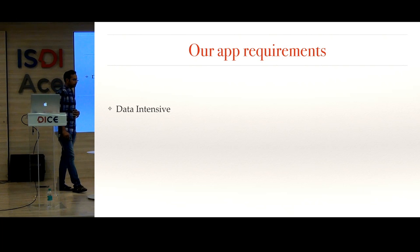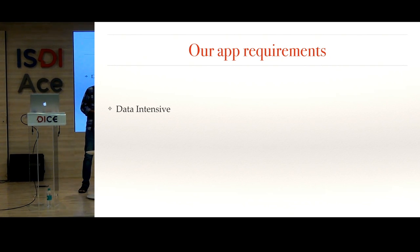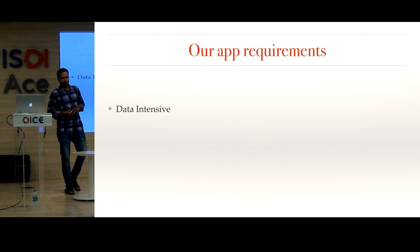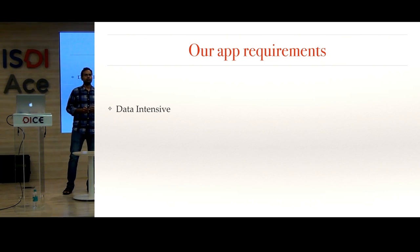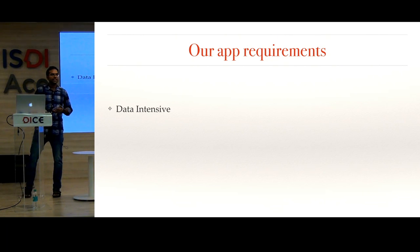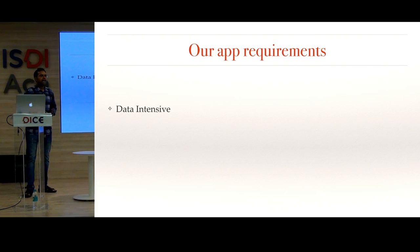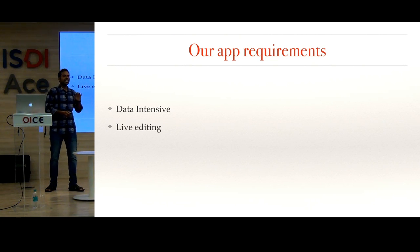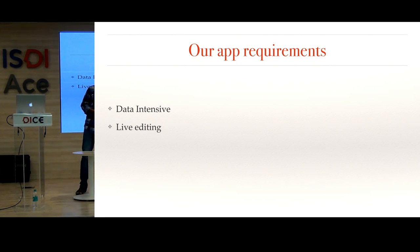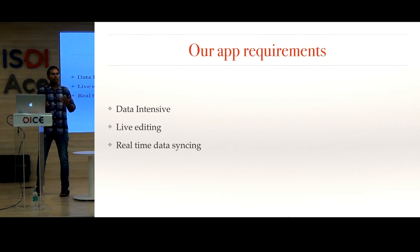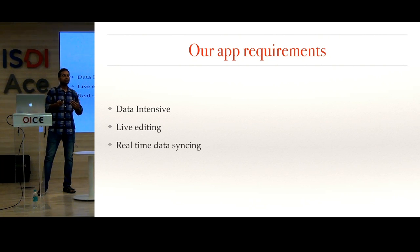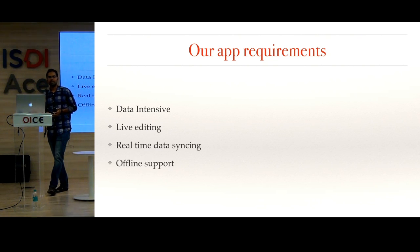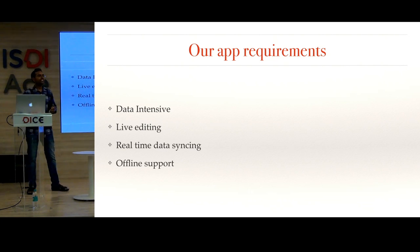Let's talk about our app. We are working on this energy auditing software, and it's a very data-intensive application. We have a lot of network-intensive features like live editing — for example, on every keystroke, we have to save that update to the backend. And we need real-time data syncing: if multiple users are using the app at a time and one user edits something, the rest of the users should get the update instantly.